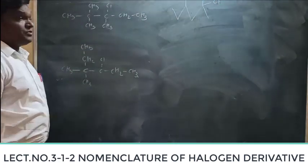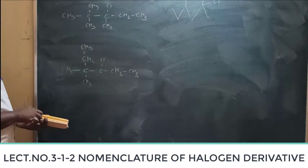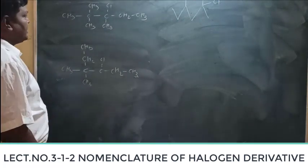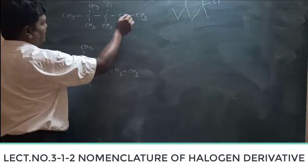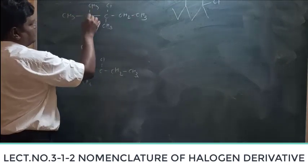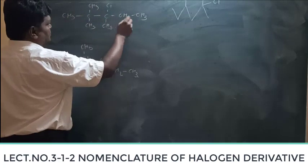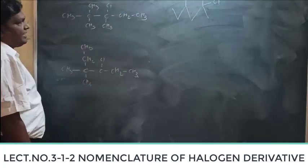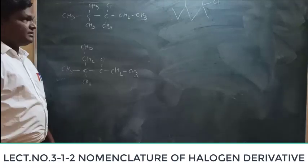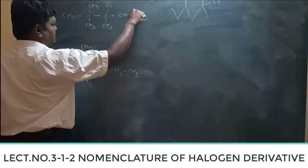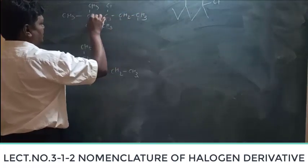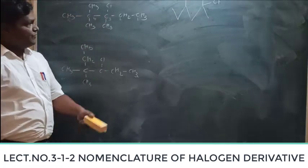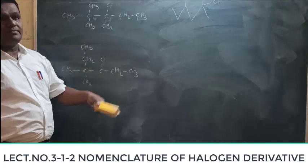How to label this compound with an IUPAC name. First, select the longest chain of carbon atoms. If you select the longest chain, it is one-two-three-four-five. Now, if you label from the left-hand side or right-hand side, you will find it getting the same number — that is three numbers. So we label from the right-hand side: one-two-three-four-five. You find that the chlorine atom acquires the lowest possible number, which is three.